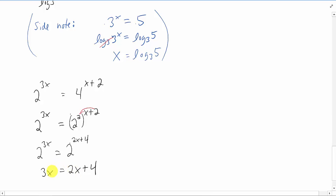Now this is an equation that is easy to solve. We can just subtract 2x from both sides. 3x minus 2x is just x equals 4. And as always it would be smart to check your answer, plug it in up here and make sure it works out.